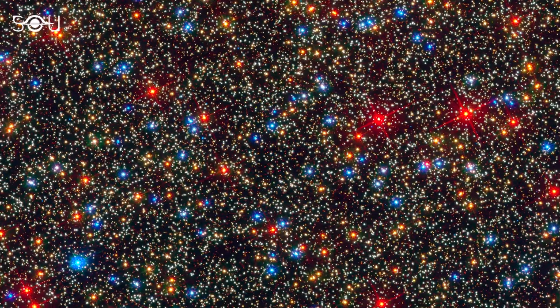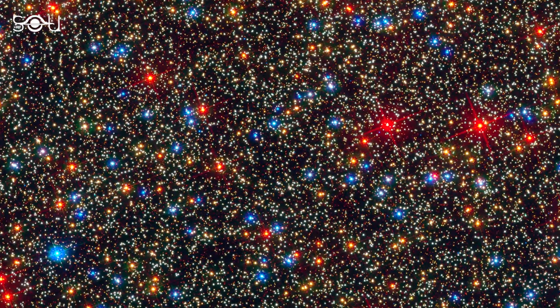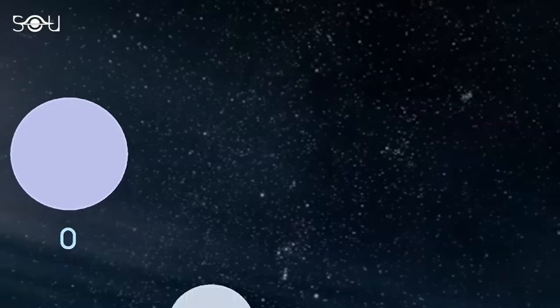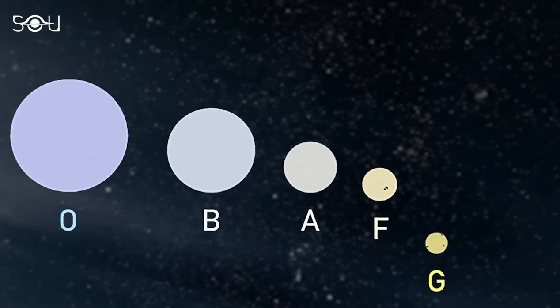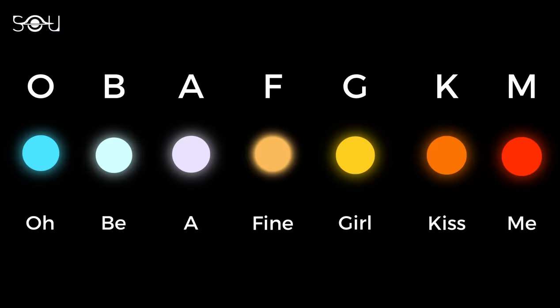Stars in the universe are sorted into seven main groups based on how hot they are: O, B, A, F, G, K, and M. A simple trick to remember these groups is with the phrase, O be a fine girl, kiss me.